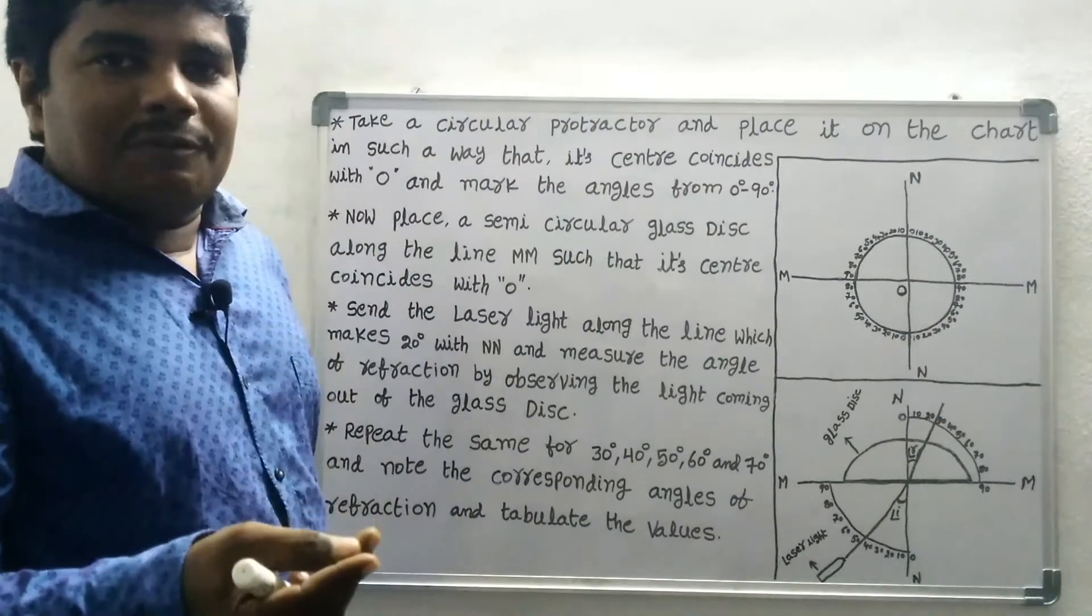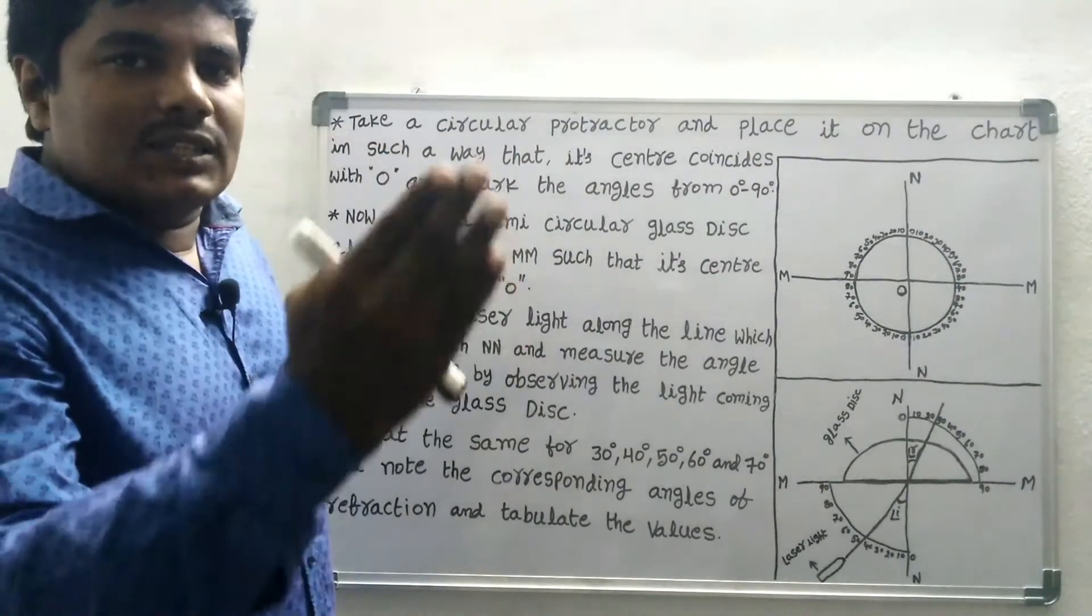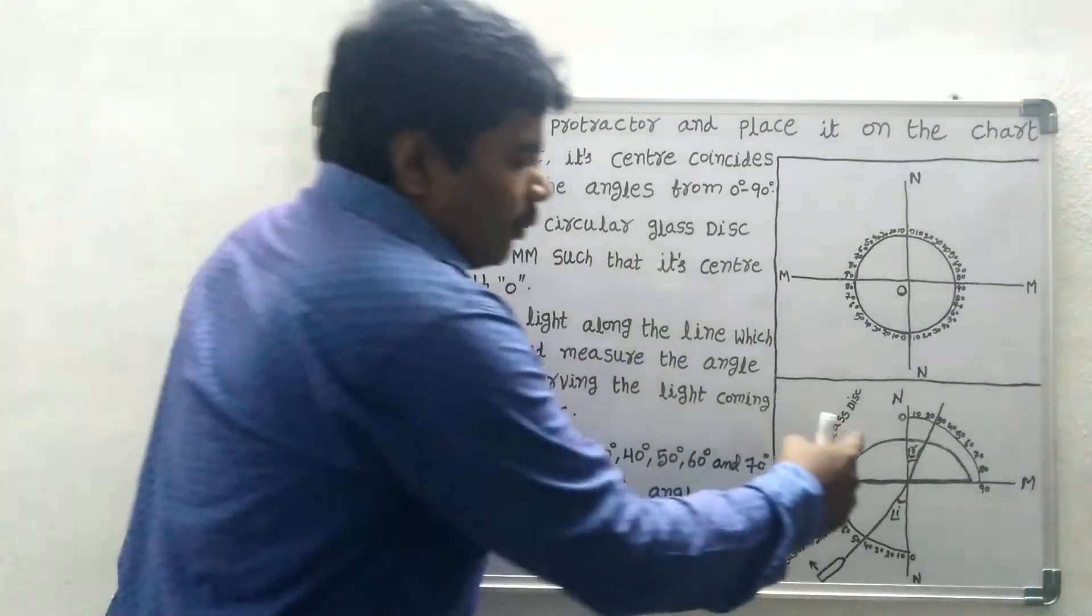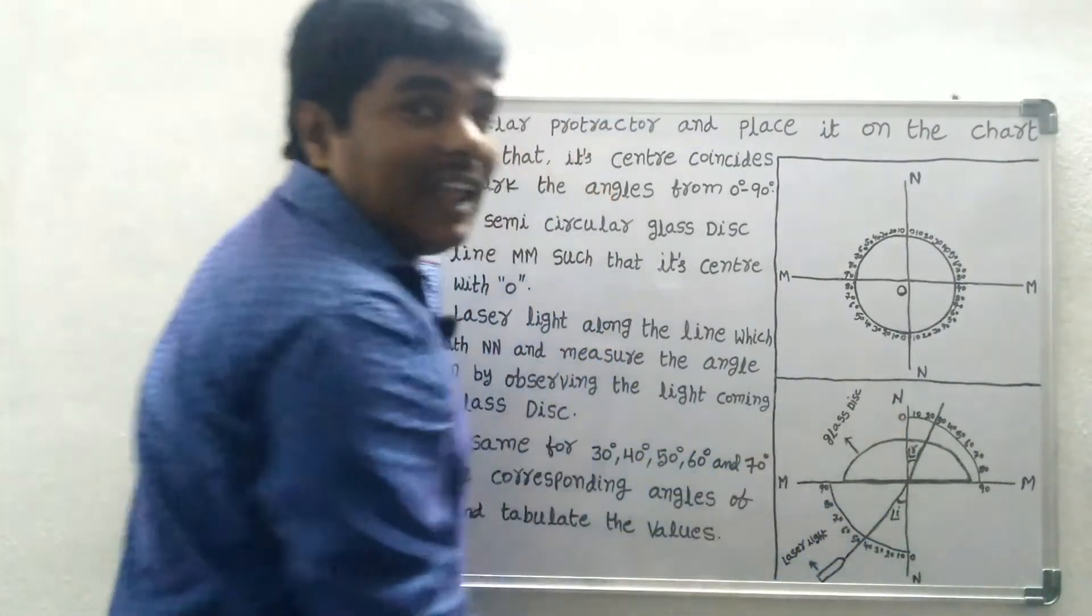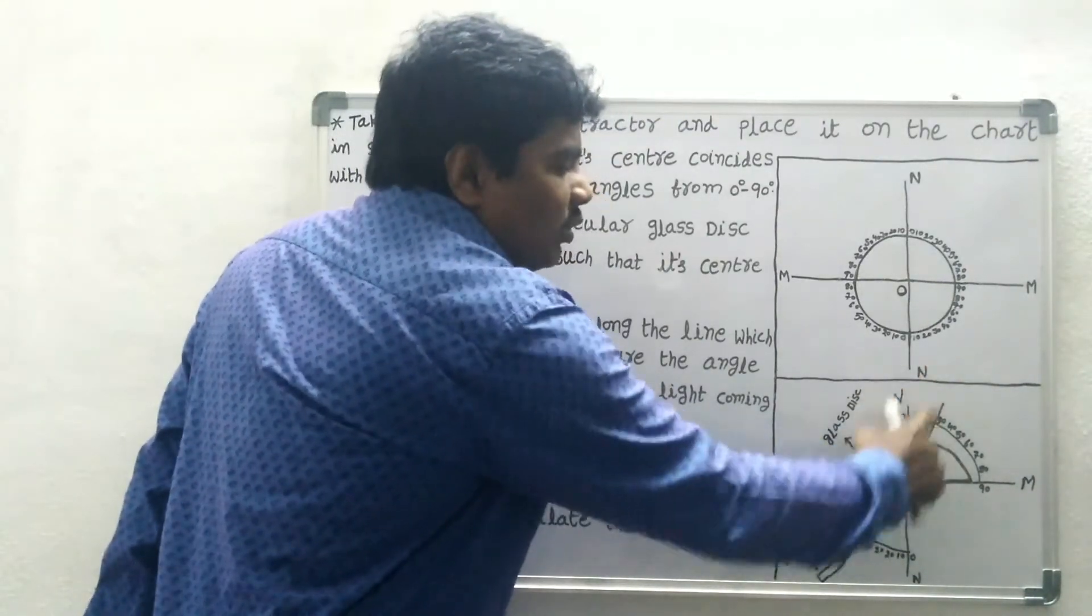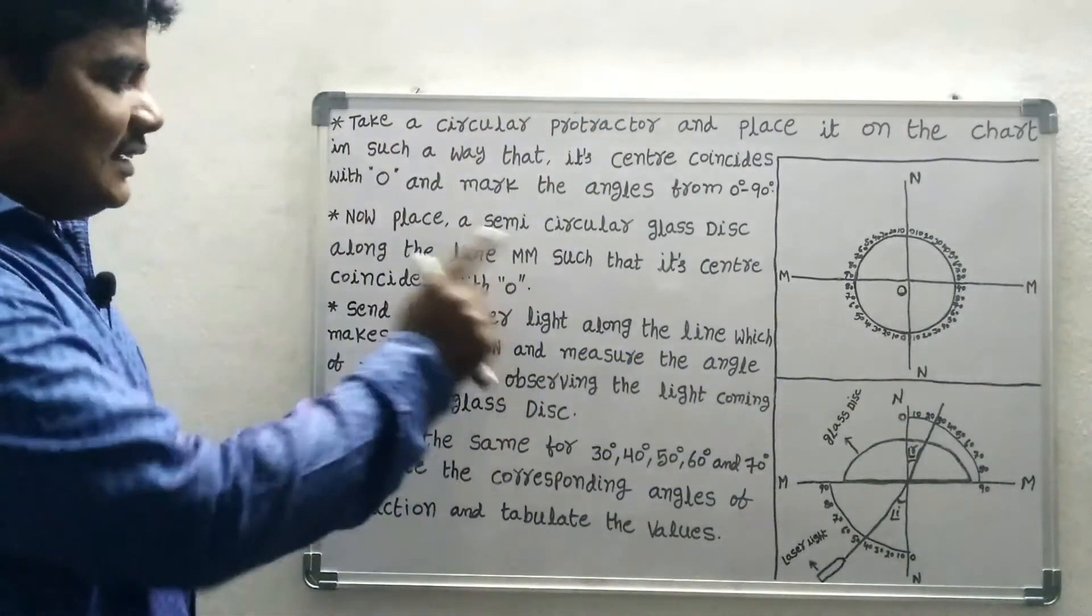Due to refraction, it bends towards the normal. Now measure the angle of refraction by observing the light coming out of the glass disk.